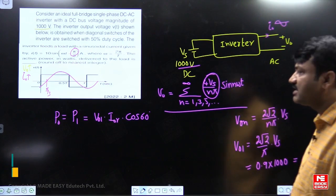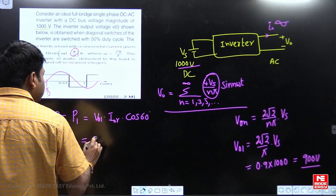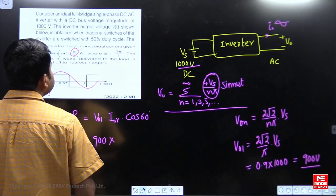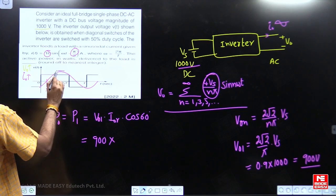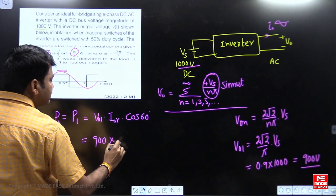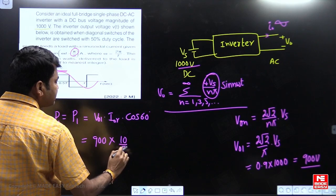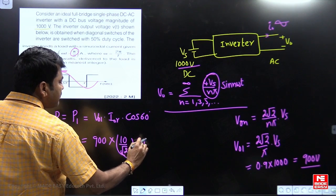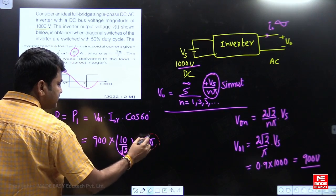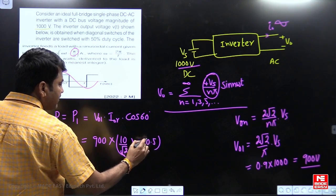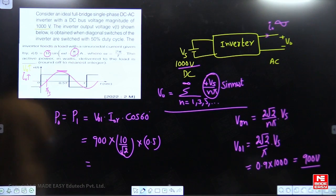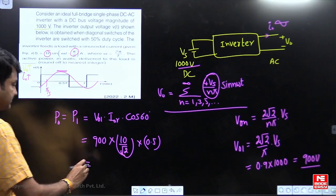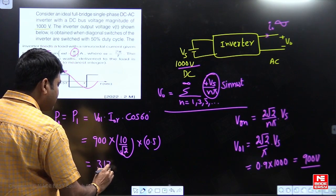And that is 900 volts. My dear students, fundamental RMS is 900 volts. So 900 volts into RMS current. See here amplitude of current is 10 amperes. This is 10 amperes amplitude. So RMS is 10 by root 2. Cos 60 is 0.5. Yes, calculate this value and tell me what is the answer. So finally, I think it is about 3182 watts.